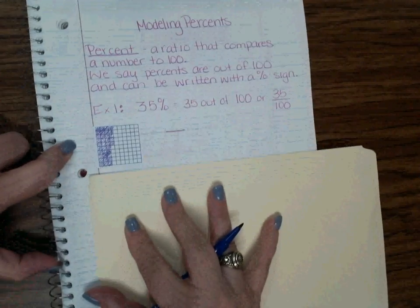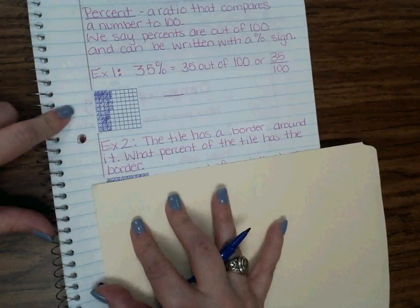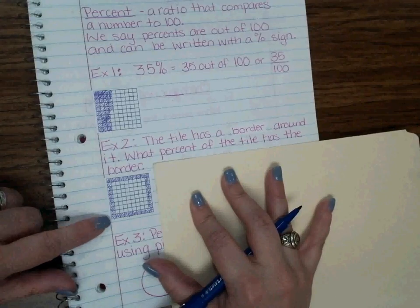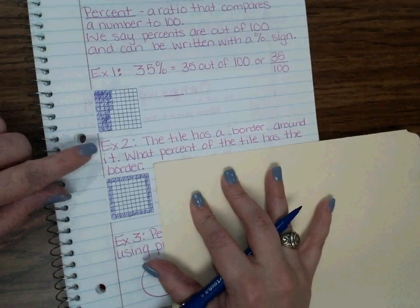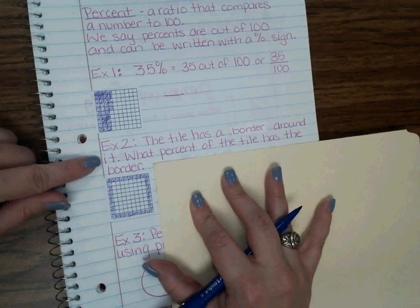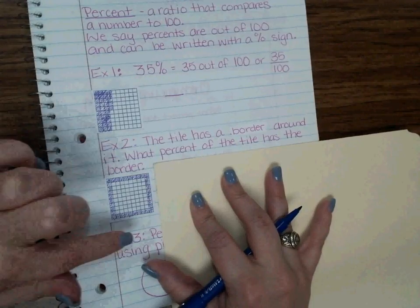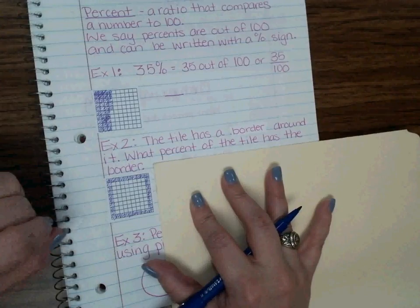Okay so example two. Here we have a tile with a border around it. It says the tile has a border around it. What percent of the tile has the border? So paste this in. Count up your tile pieces and let's see what that is. And Ms. Sorrells if you count that out, do you know how many pieces there are?